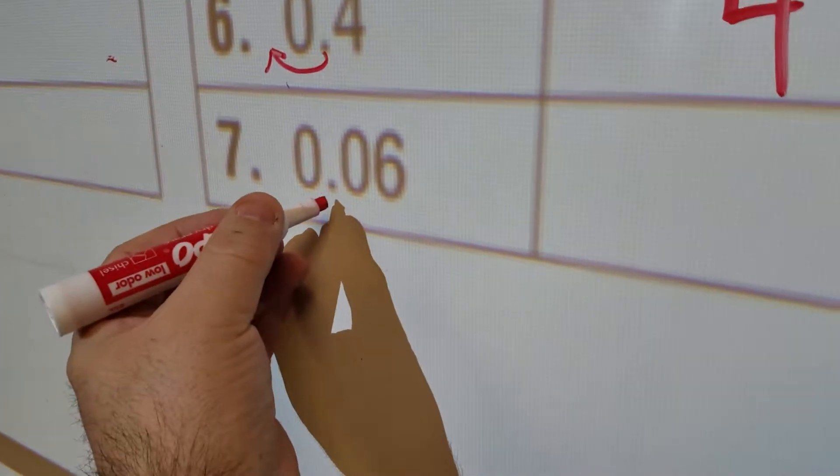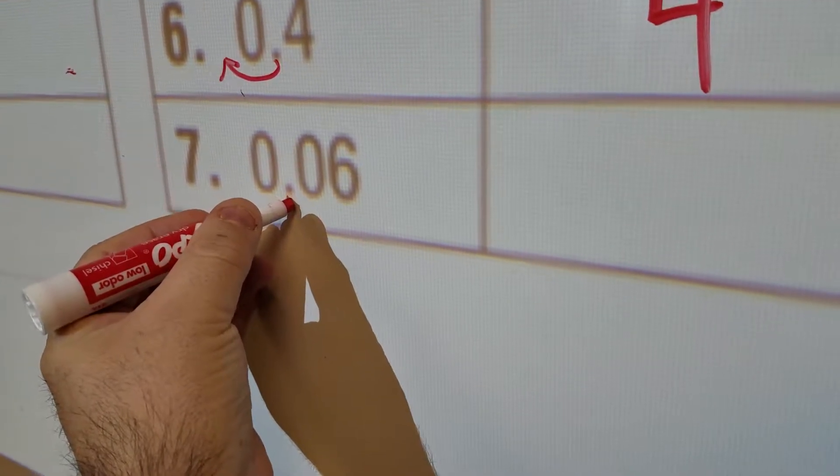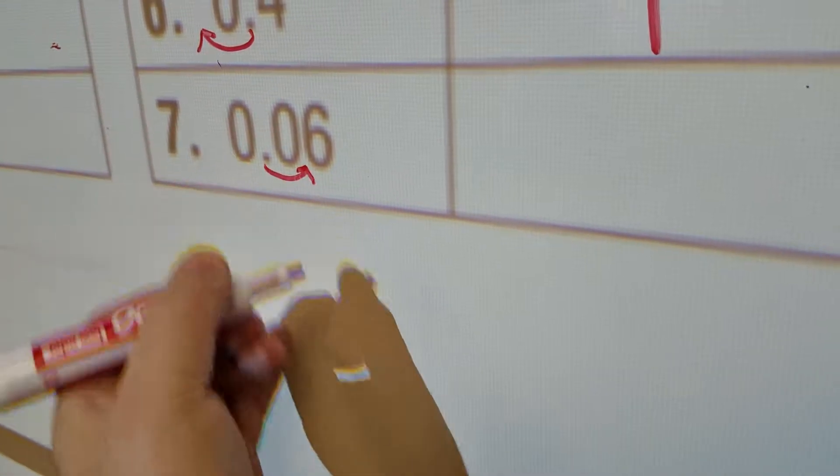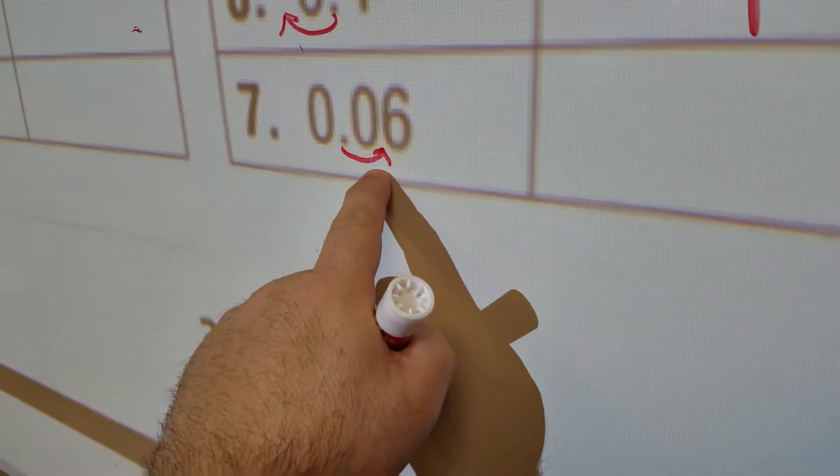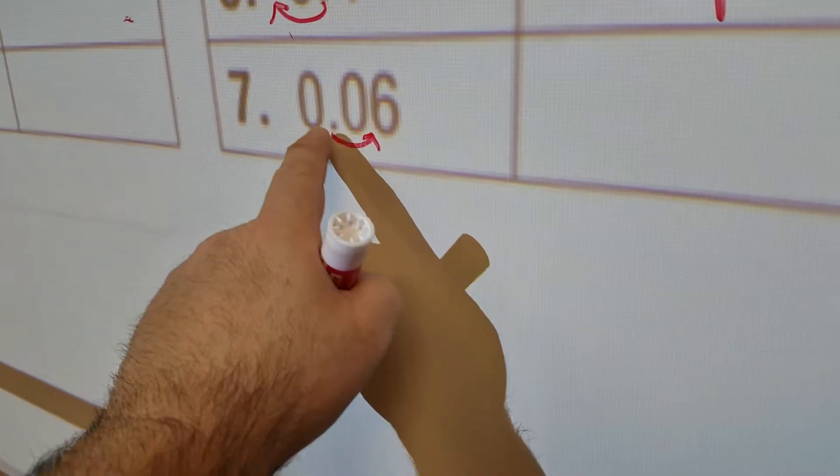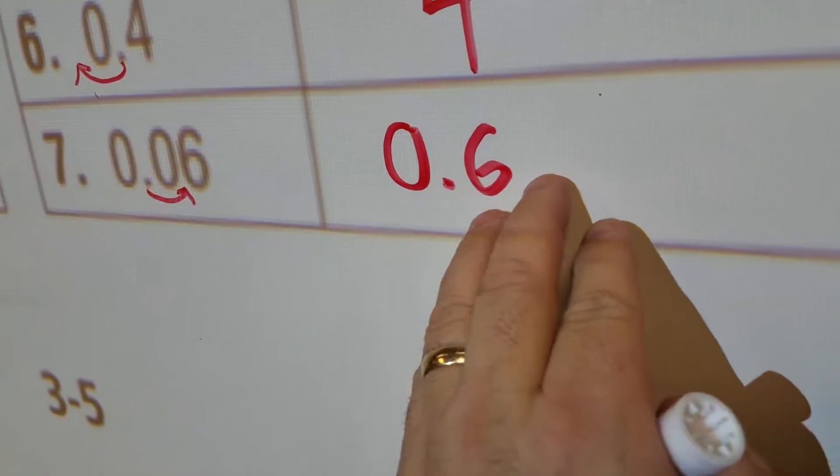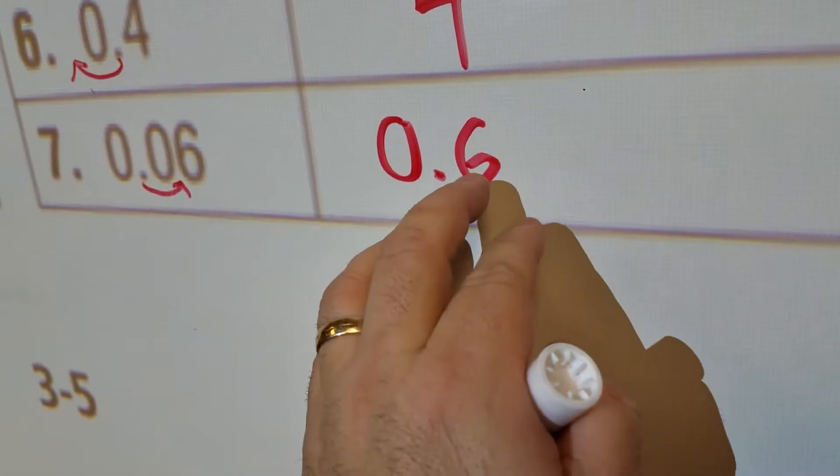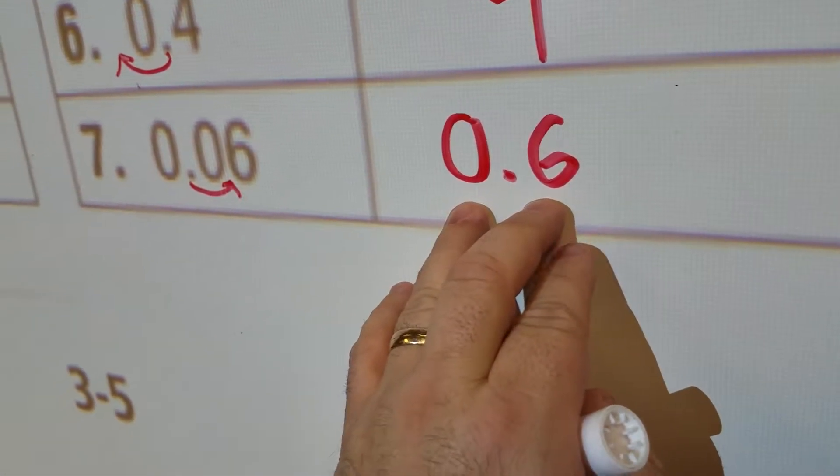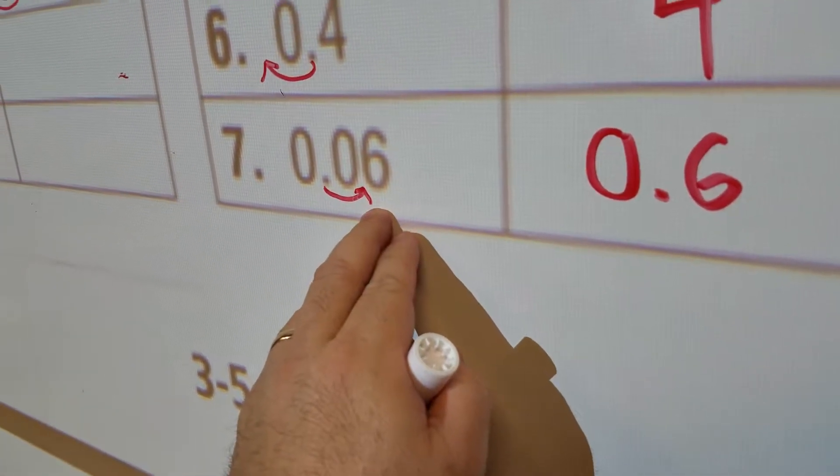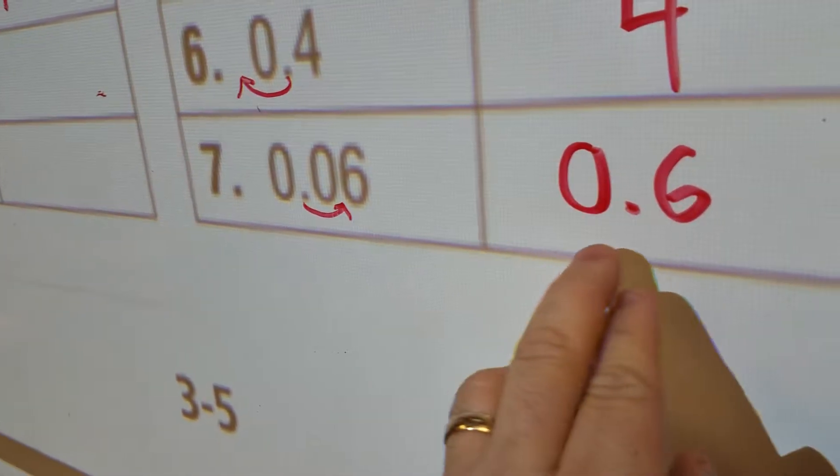What about number 7? 10 times as much is 6 hundredths. Again, because I'm moving over one place value, I'm going to move that decimal over one place value. And so that looks like it's going to be 0.6. I don't need to add any more zeros here because these zeros actually go on forever. So I like things simple. 6 tenths. 10 times as much as 6 hundredths? 6 tenths.